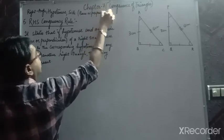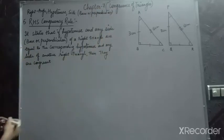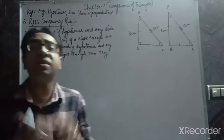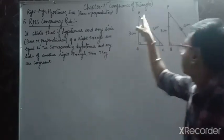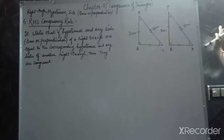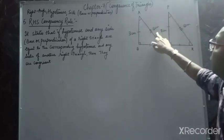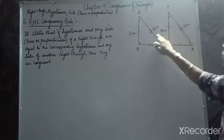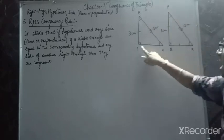RHS is always applicable in right-angled triangles. Just observe the figure. The hypotenuse is the same in both figures because it is the longest side, 90° is marked in both, and the perpendicular sides are both 3 cm.